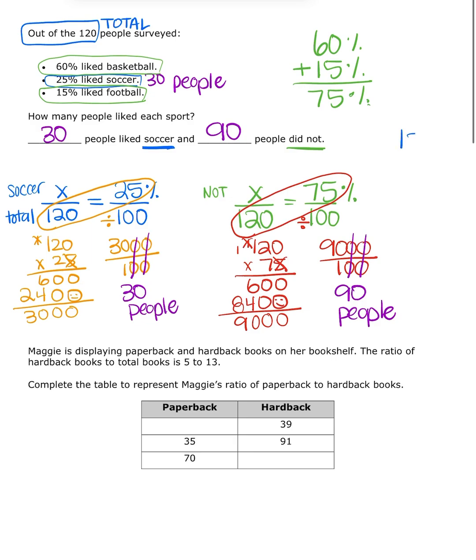And I can check myself, because my two answers together should equal my total. So my total was 120. So together, the people who like soccer, 30, and the people that don't like soccer, 90, should equal 120. And that does, in fact, equal 120 when I add them together. So that's how I checked myself. And that's number one. All right, go solve number one on your homework.